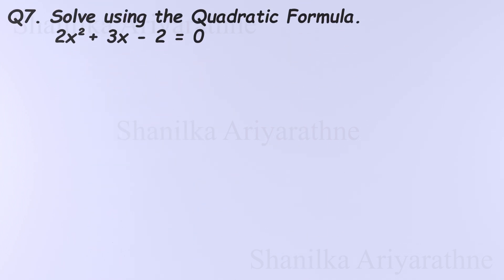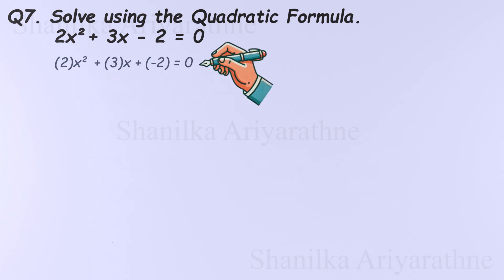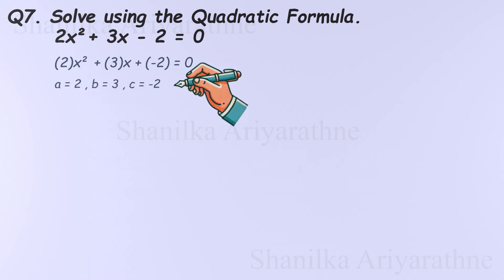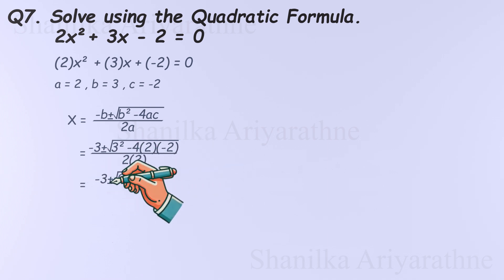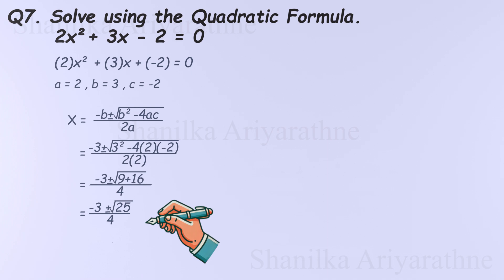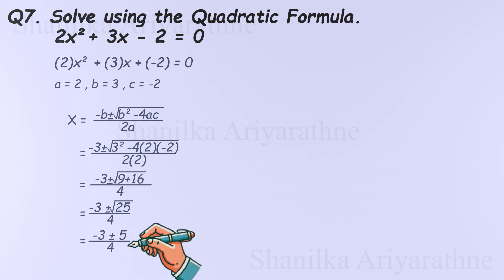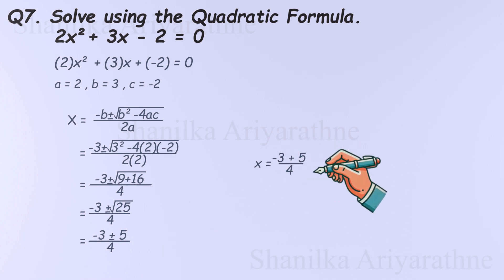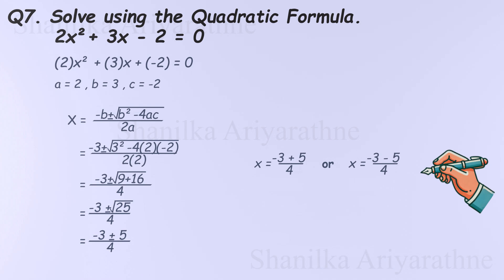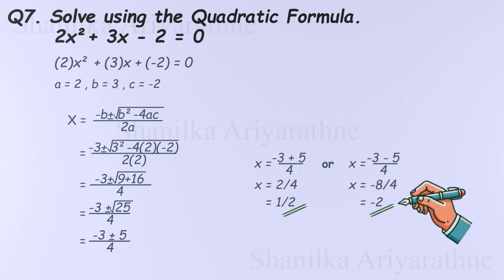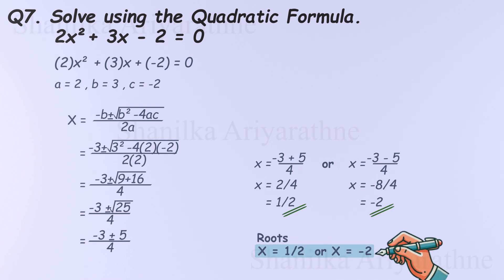Let's try another problem: 2x-squared plus 3x minus 2 equals 0. Identifying the values: a is 2, b is 3, and c is negative 2. Substituting into the quadratic formula: the square root of 9 plus 16 is the square root of 25, which is 5. So x equals negative 3 plus or minus 5 divided by 4. There are two solutions: x equals negative 3 plus 5 divided by 4, giving one-half, or x equals negative 3 minus 5 divided by 4, giving negative 2. Two solutions without needing to factor.